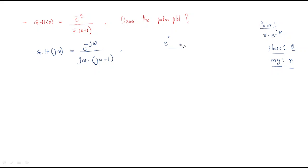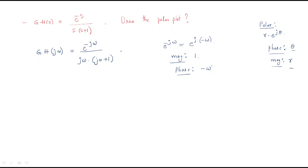We should convert the term e^(-jω) into the form e^(jθ). So e^(-jω) can be written as e^(j(-ω)). For this term, the magnitude equals 1 and the phase equals -ω.